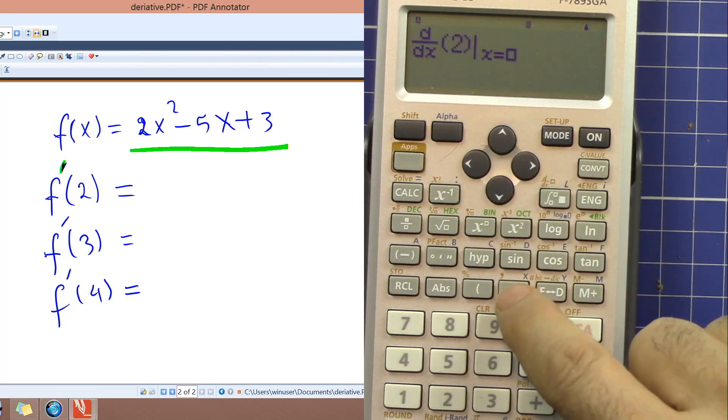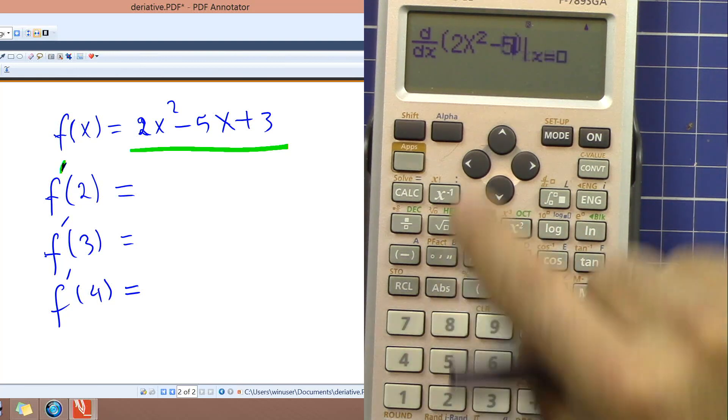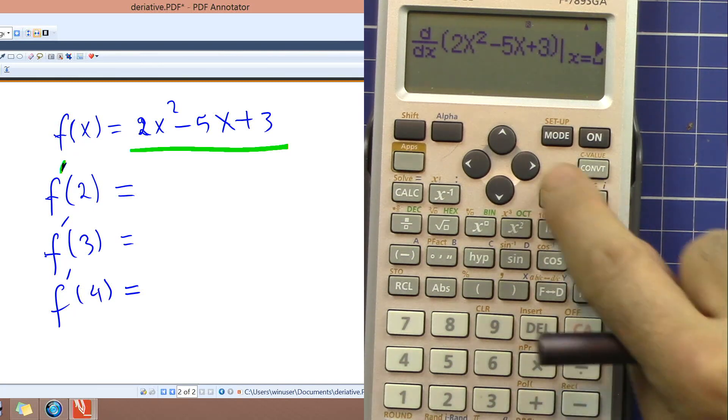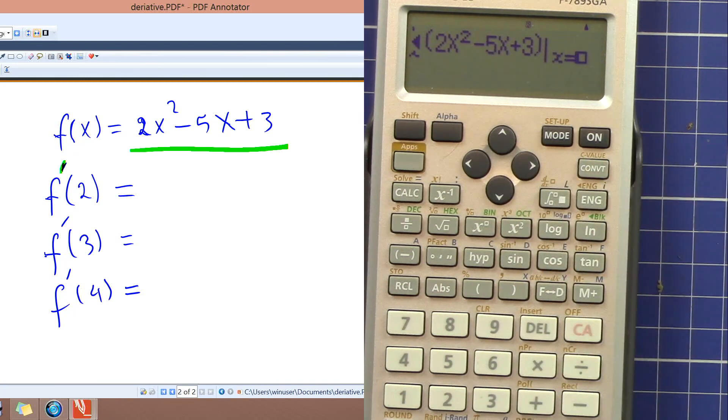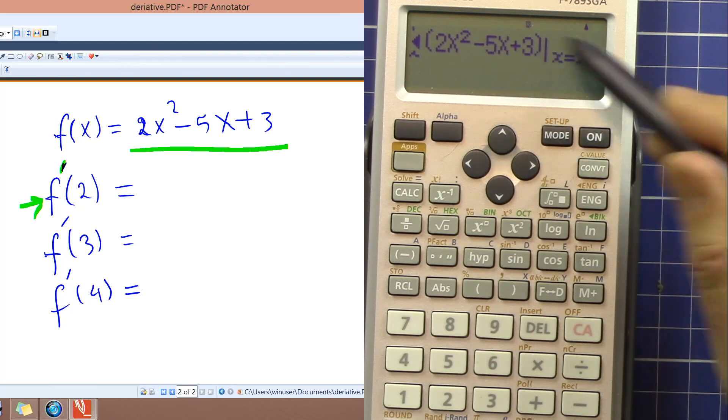So 2 and then alpha x squared minus 5 and then alpha x plus 3. And then with the arrow go to the right. Now we are doing the first one, 2, so it means take the derivative and evaluate it with x equal 2. So this is 3.